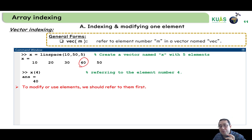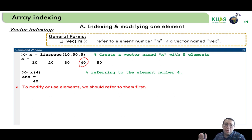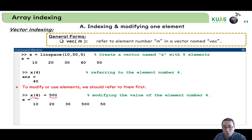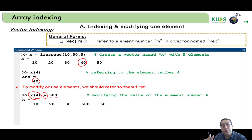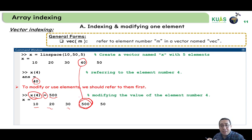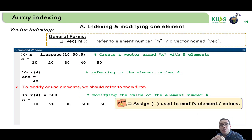To modify an element, first refer to its position and then use the equal sign to assign a new value. For example, x(4) = 500 changes the fourth element from 40 to 500, giving the output 10, 20, 30, 500, 50. The equal sign is used to assign or modify the element value.